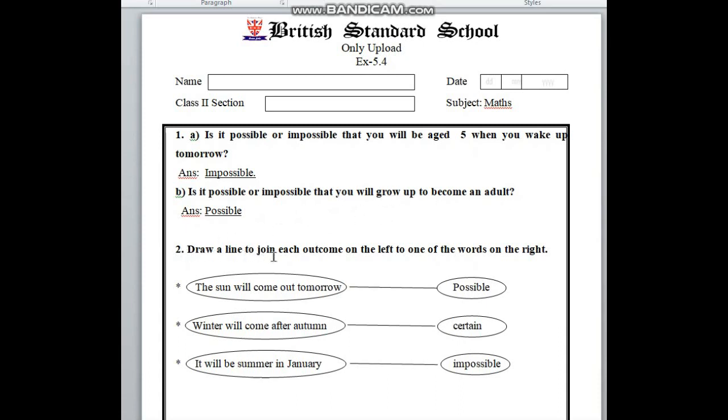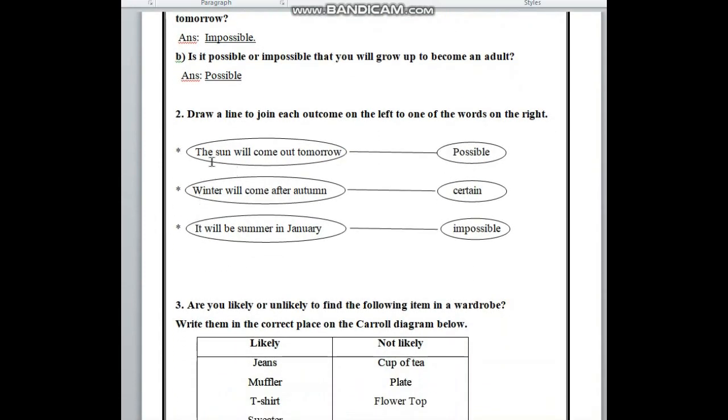Number 2, here is draw a line to join each outcome on the left to one of the words on the right. In the left side here we can see the sun will come out tomorrow. Yes, it is possible so we have to draw this line with possible. Next one, winter will come after autumn and we know always winter will come after autumn. So, it will be certain. It will be summer in January. We know that in January is winter, so it is impossible. So, we have to join with this line, impossible.